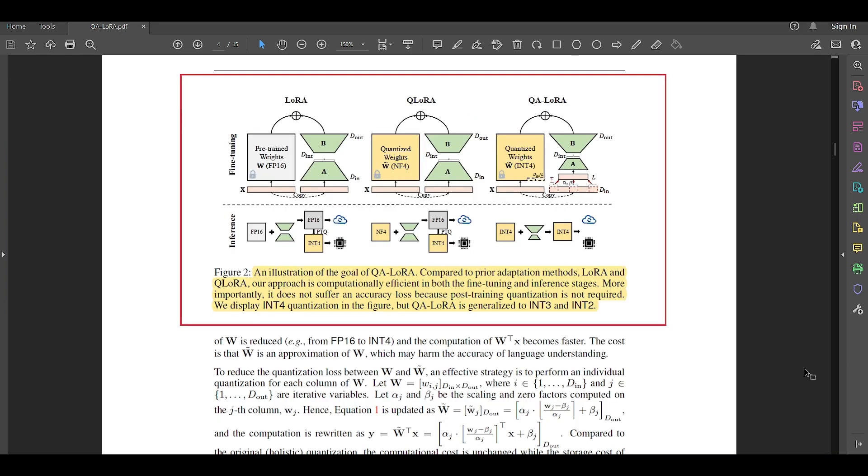And here is the overall architectural overview and comparison between LoRA, Q-LoRA and QA-LoRA. So, they say that compared to prior adaptation methods, LoRA and Q-LoRA, our approach is computationally efficient in both the fine-tuning and inference stages. More importantly, it does not suffer an accuracy loss because post-training quantization is not required. We display INT4 quantization in the figure, but QA-LoRA is generalized to INT3 and INT2.